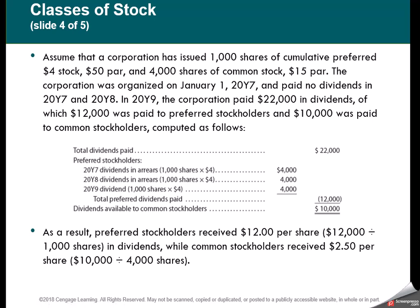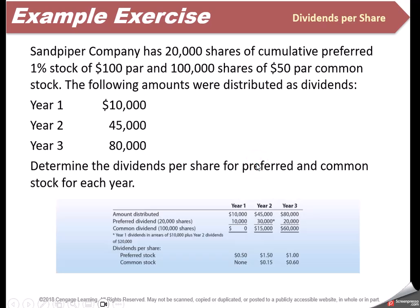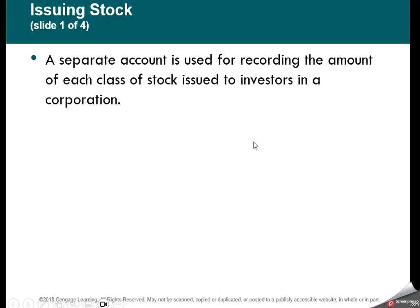Here's an example: they have 1,000 shares of cumulative preferred stock and paid no dividends in 2027 or 2028. Then in 2029, the corporation paid $22,000 in dividends, of which $12,000 is paid to the preferred stockholders and $10,000 to the common stockholders. They had 1,000 shares with cumulative dividends of $4 per share, so they owed for three years — the two years in arrears plus the current year. That gets paid first, and anything remaining goes to the common stockholders.